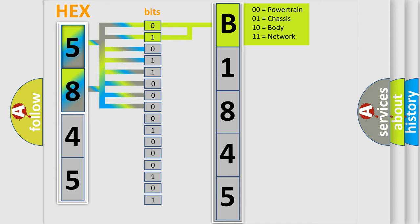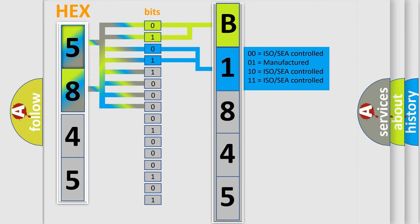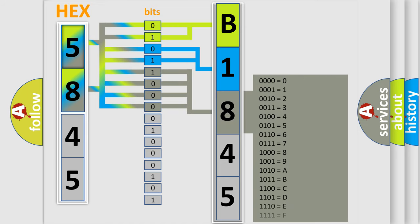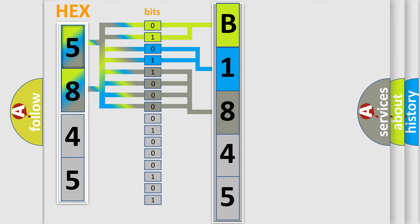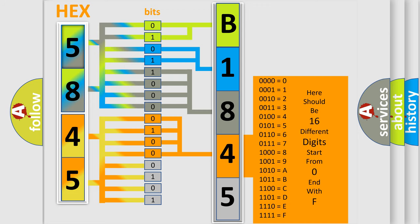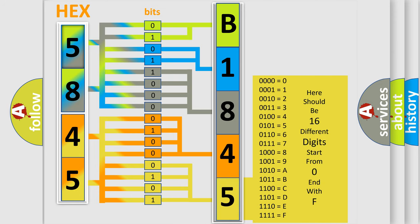By combining the first two bits, the basic character of the error code is expressed. The next two bits determine the second character. The last four bits of the first byte define the third character of the code. The second byte is composed of a combination of eight bits: the first four bits determine the fourth character, and the last four bits define the fifth character. A single byte conceals 256 possible combinations.